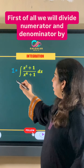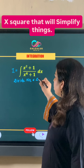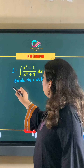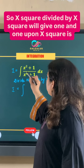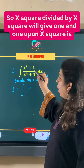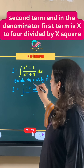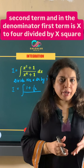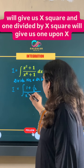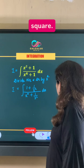First, we divide numerator and denominator by x squared — that will simplify things. So x squared divided by x squared gives 1, and the second term in the numerator is 1 upon x squared. In the denominator, x to the power 4 divided by x squared gives x squared, and 1 divided by x squared gives 1 upon x squared.